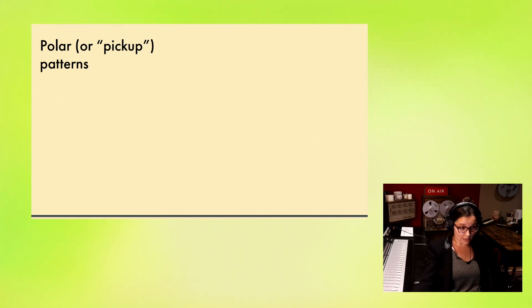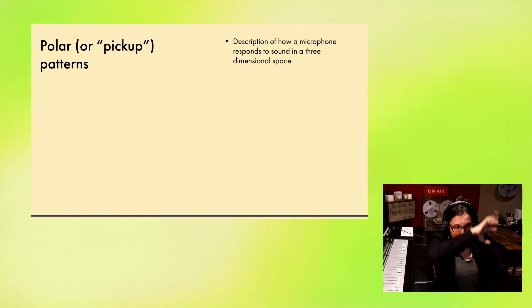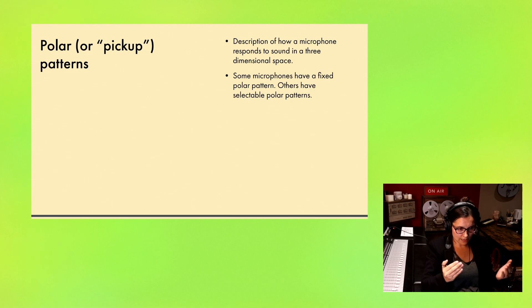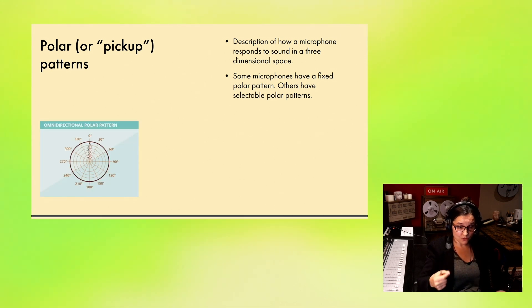Let's dive right in to starting with polar or pickup patterns. A polar pattern is a description of how a microphone responds to sound in a three dimensional space. Some microphones pick up all around them, 360 degrees. Others have different patterns and reject sound at certain angles of incidents or angles that you're approaching the microphone. Some mics have a fixed polar pattern, only one polar pattern, and others have selectable polar patterns. You can decide which polar pattern you want depending on the situation and the result that you want.